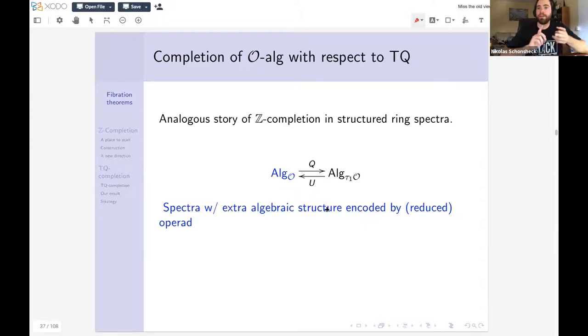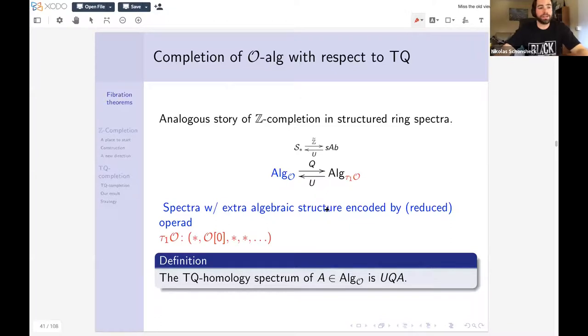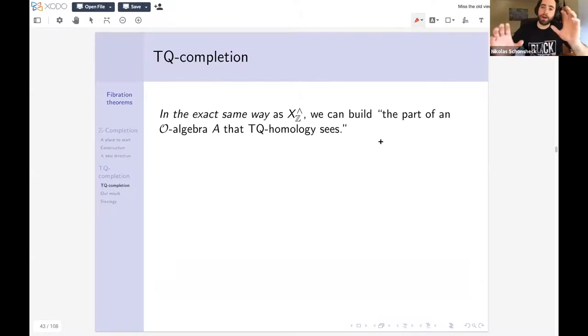So remember, for spaces, we started with this adjunction, simplicial sets to simplicial abelian groups. And this is the analogous adjunction that we're going to have in structured ring spectra. So ALGE-O, what this morally is, is just spectra with extra algebraic structure encoded by a reduced operad. So this is exactly the category that Duncan was talking about. So we can think of commutative ring spectra, associative ring spectra, E_N, all different kinds of algebraic flavors. Because this is so general and so algebraically rich, though, it's not necessarily the best category to be working in. So what we do is go to a nicer category, which is this ALGE-TAU-1 of O, because TAU-1 of O throws away a lot of information. So it agrees with O at level zero, but other than that, it's trivial. So we've lost a lot of information, but the upside is it's a much nicer place to work. So again, this is the adjunction. This is the analogy we're thinking of. And the TQ, topological Quillen homology of an O-algebra, we define as what I get when I just take somebody in here, go over to the nicer category, and come back, just like we defined ordinary homology of a space.